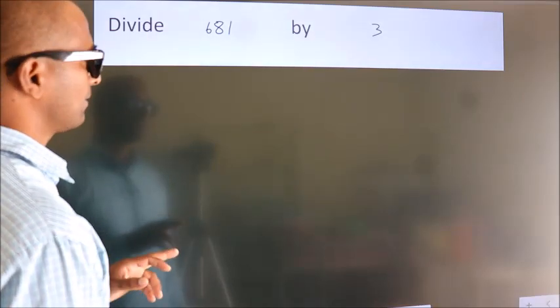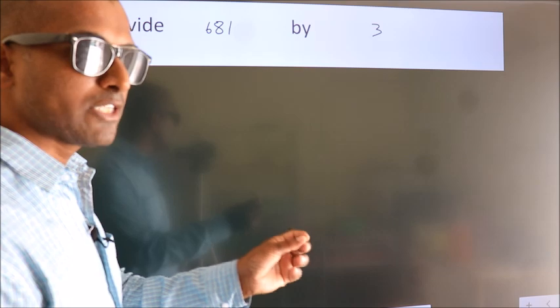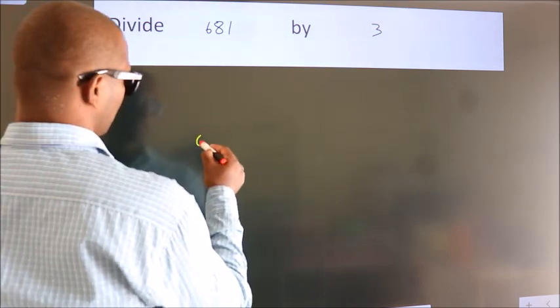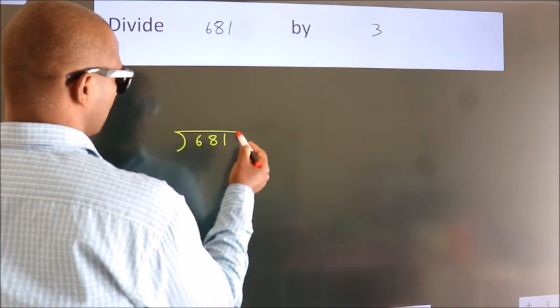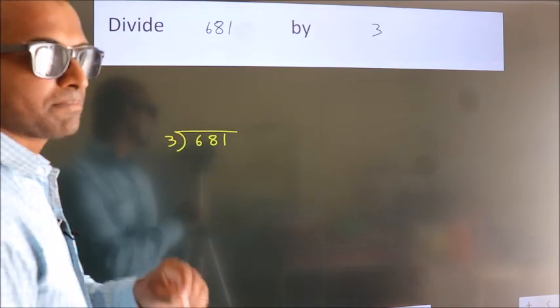Divide 681 by 3. To do this division, we should frame it in this way. 681 here, 3 here. This is your step 1.